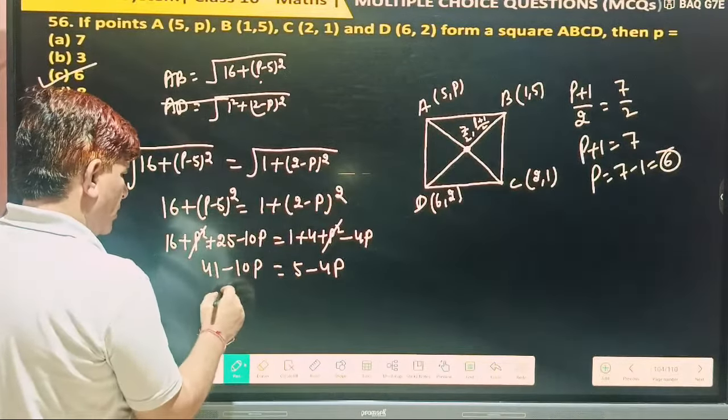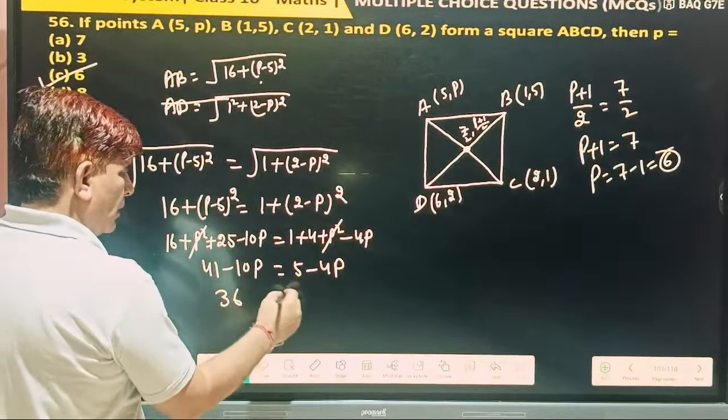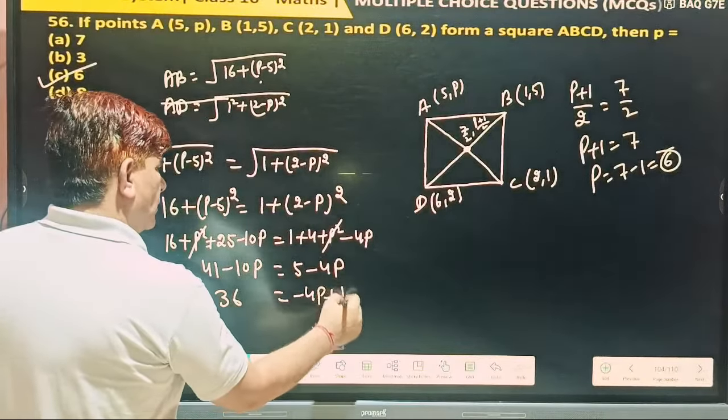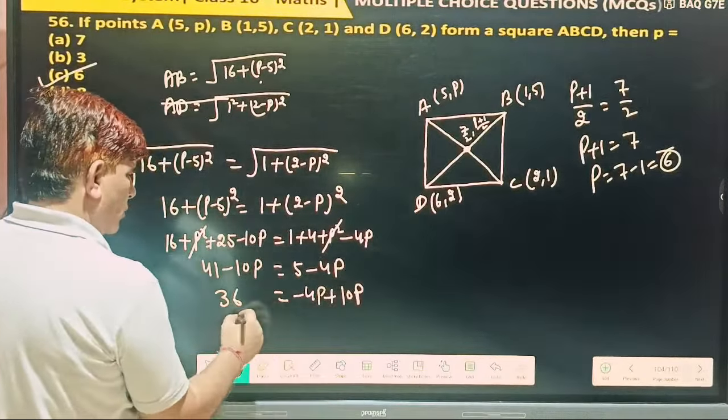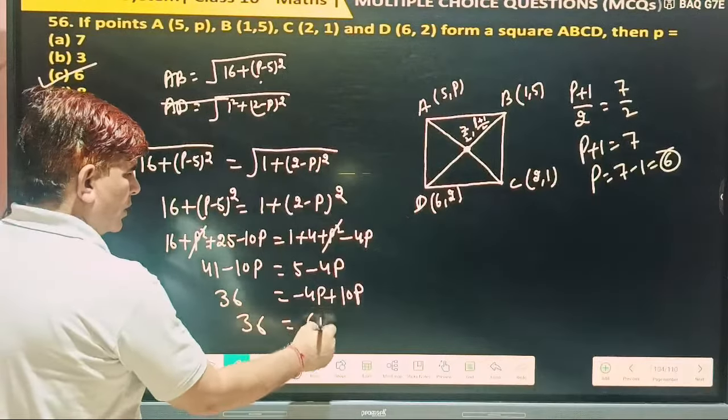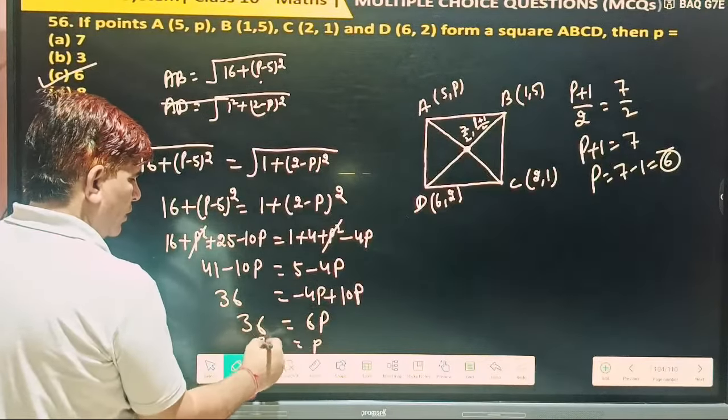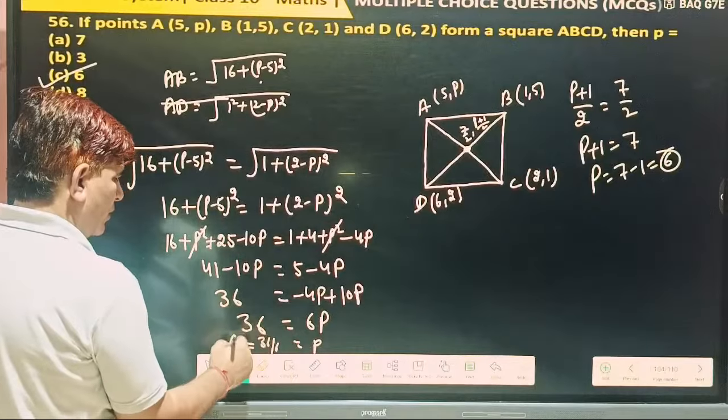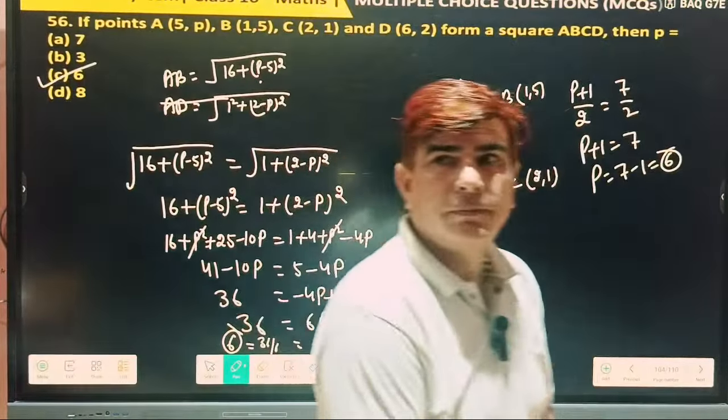Take in that side. So 36 equal to minus 4P, 10P. So 36 is equal to 6P. And P equal to divide by how much? 6. Any, you can play, you can know. Thank you.